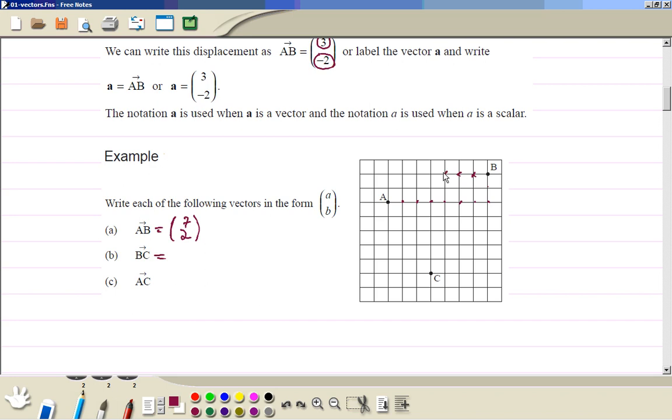Then BA, going from B to A, is minus seven in the negative y direction. Finally, AC is one, two, three in the x-direction, then one, two, three, four, five in the negative y-direction.